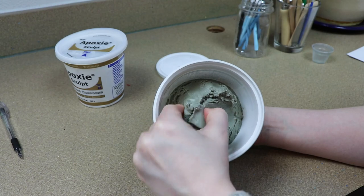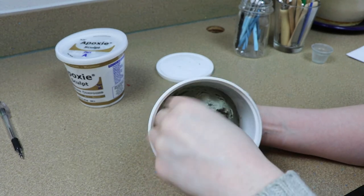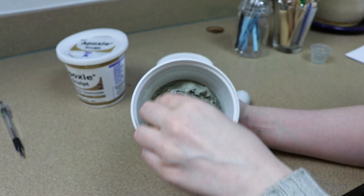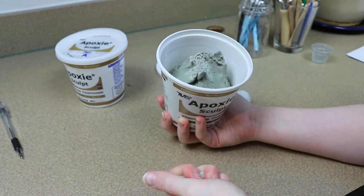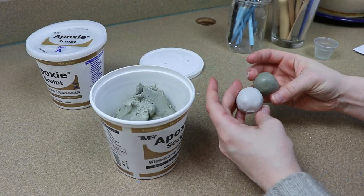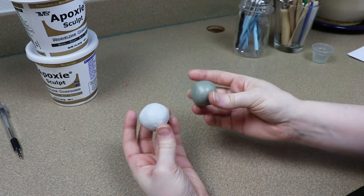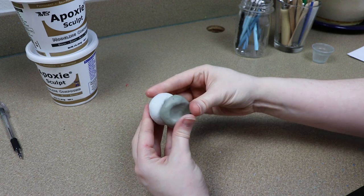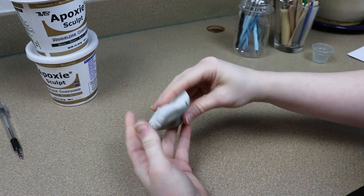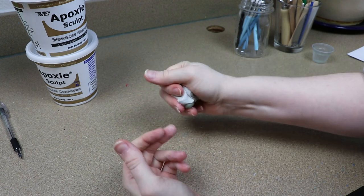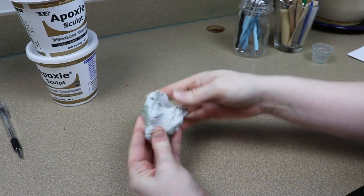So how you use this clay? It comes in part A and part B. You'll have equal amounts and basically you'll take how much you want to use equal amounts of both A and B and you'll blend them together. And you'll blend them together for about two or so minutes or until the color is one solid color because you'll notice that each part has a different tint to it.